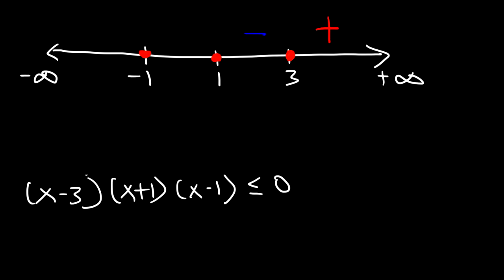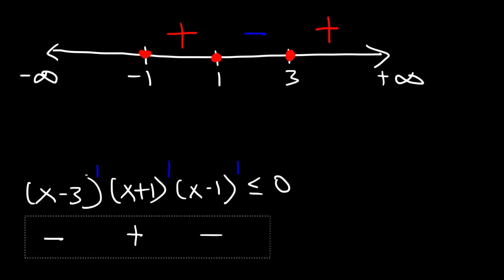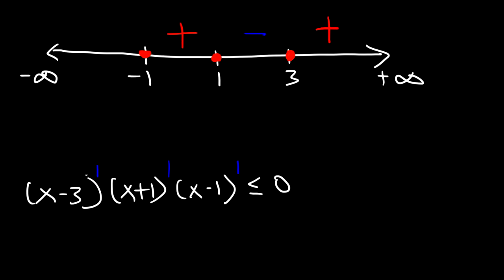The signs will alternate because the multiplicity of each zero is 1. So the next region should be positive. Let's pick 0, between negative 1 and 1: 0 minus 3 is negative, 0 plus 1 is positive, 0 minus 1 is negative. Two negatives make a positive result. And the last region should be negative — trying negative 2: negative 2 minus 3 is negative, negative 2 plus 1 is negative, negative 2 minus 1 is negative. The net result is negative.